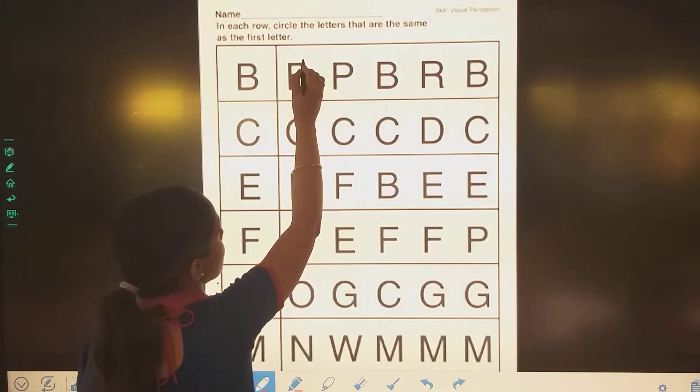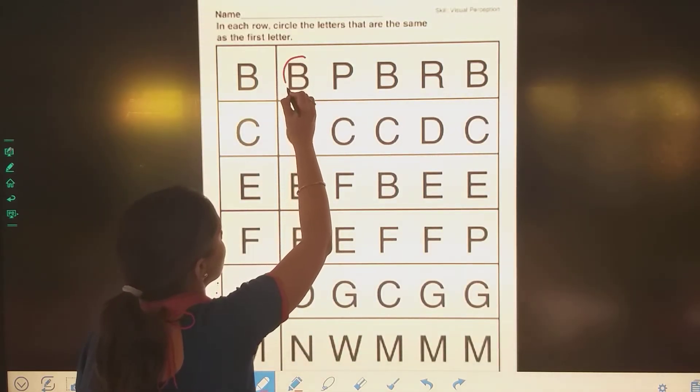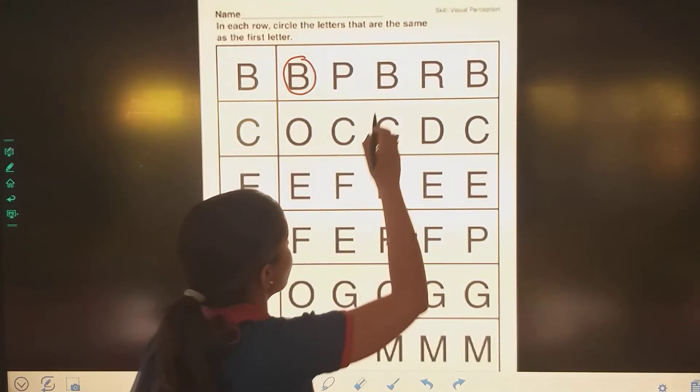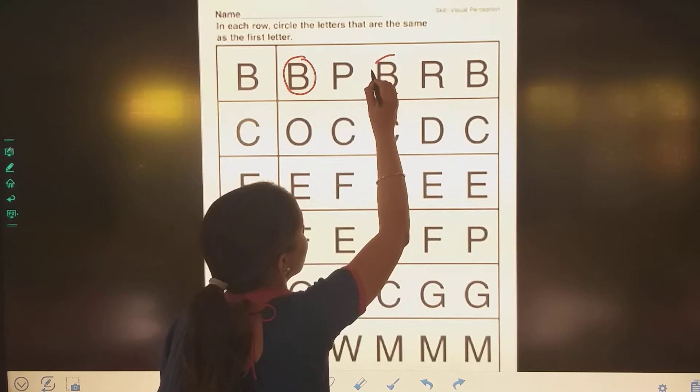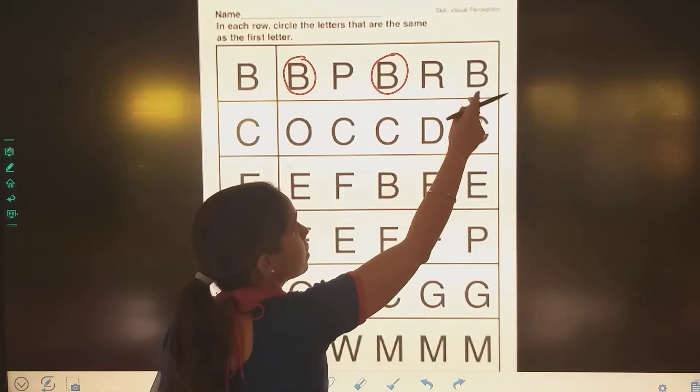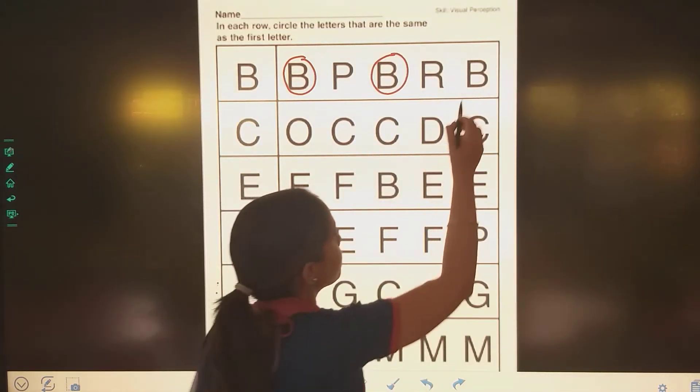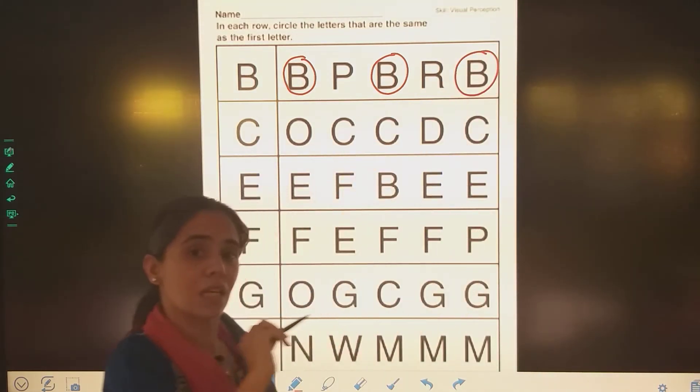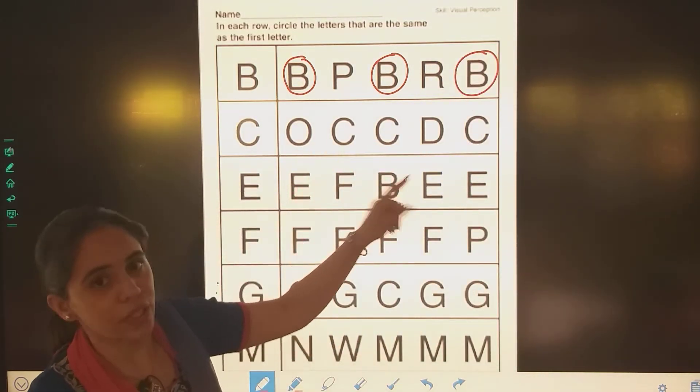Toh mein isko circle karoongi. Idhar bhi B hai, right? Toh isko bhi hum circle karengi. This is also B. Is tarah se hum joh same letter hai, usko hi circle karengi.